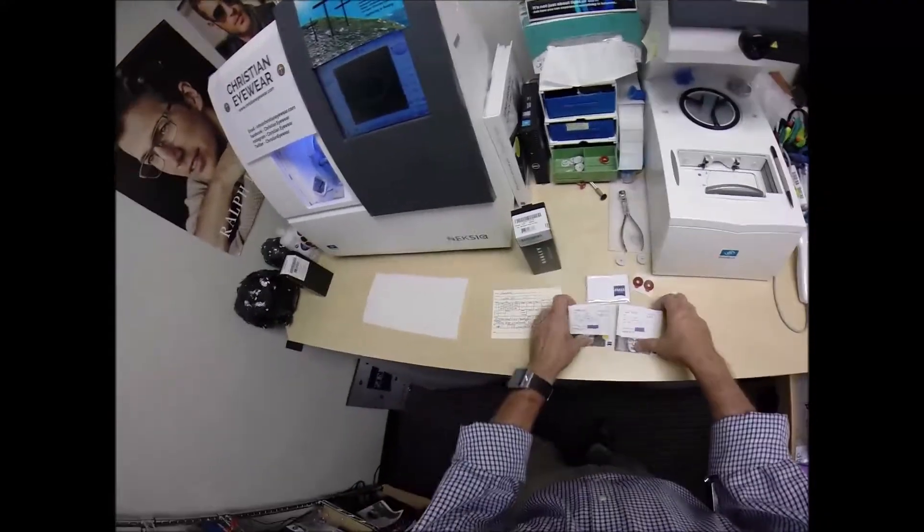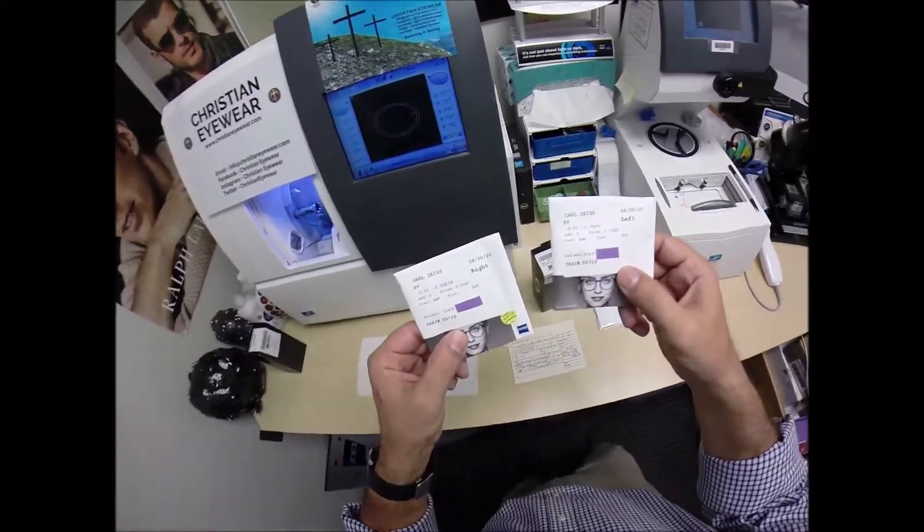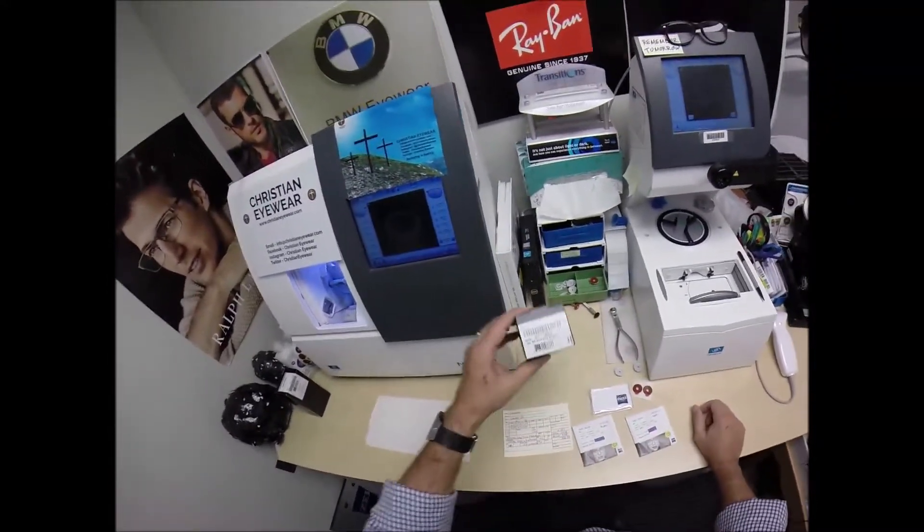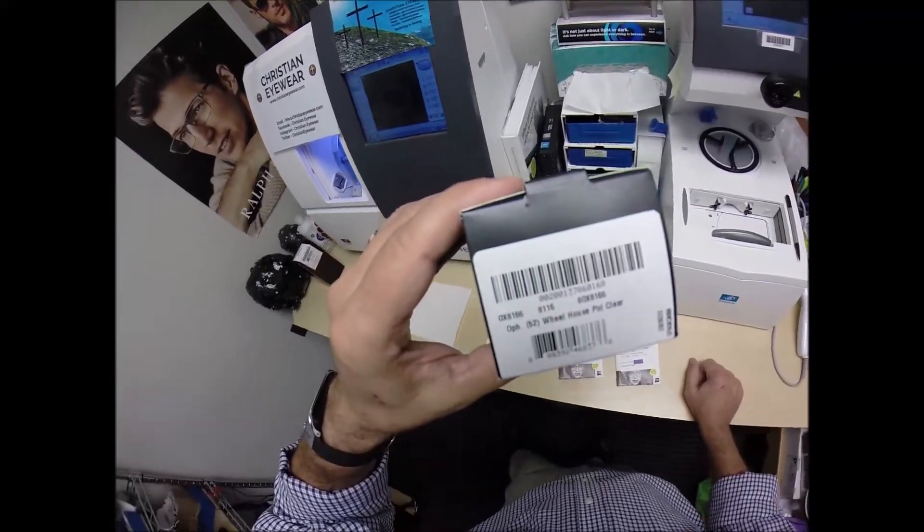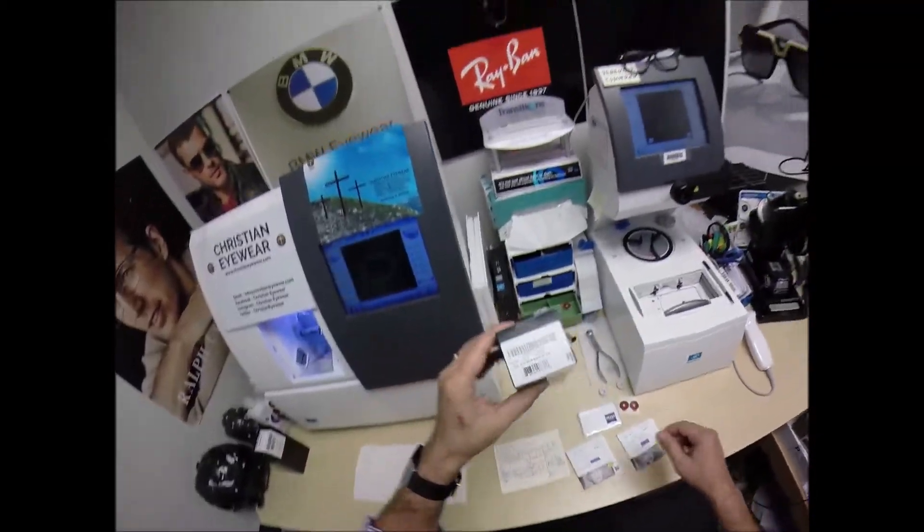I'm going to cut the Zeiss Photofusion Extra Gray Lenses with the Silver Flash Mirror for your Oakley 8166, which is the wheelhouse, color 02, the polish clear in the 52 eye size.